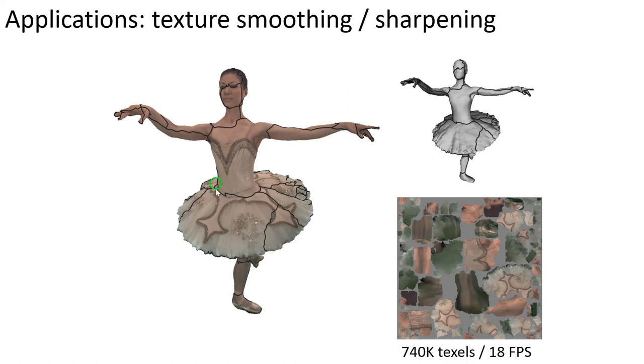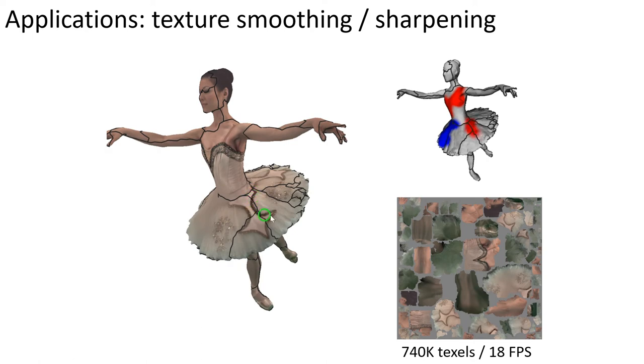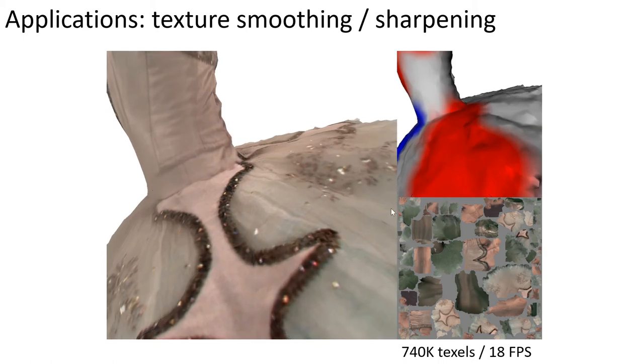Our method supports a number of applications. We support localized sharpening and smoothing using a paintbrush interface. The user prescribes gradient modulation weights, and the system interactively updates the texture by performing one multi-grid v-cycle at each rendered frame. The visualization shows the gradient weights at the top right, with blue corresponding to smoothing and red corresponding to sharpening. Note that the processed texture remains seamless across chart boundaries.